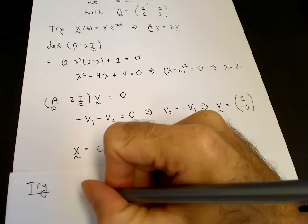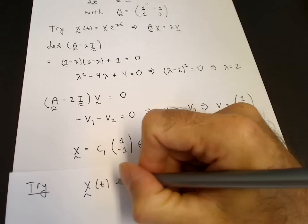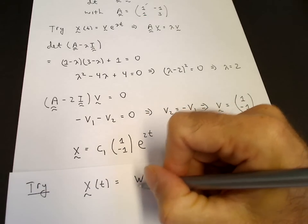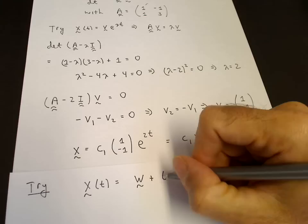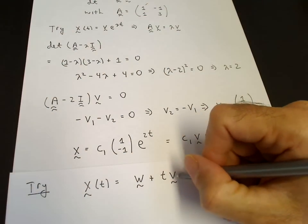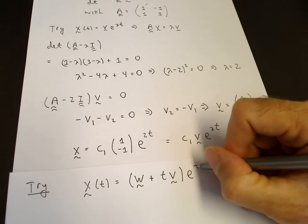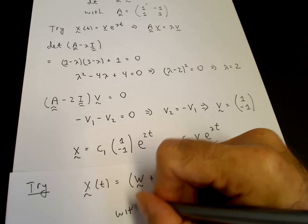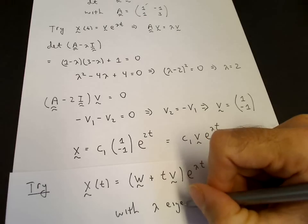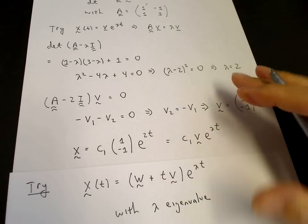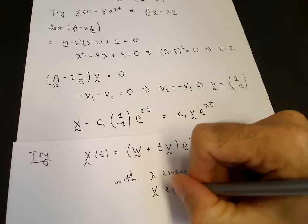The proper ansatz for the second solution is to try x(t) equals some new vector w plus t times the eigenvector v, all times e to the lambda t — where lambda is the eigenvalue we just found and v is the eigenvector.